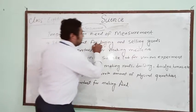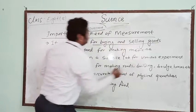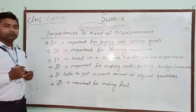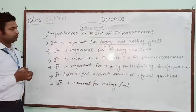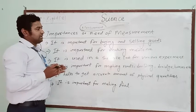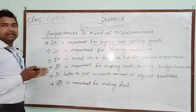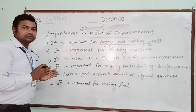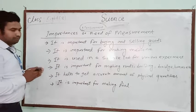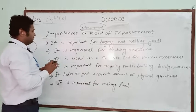The first importance is buying and selling goods. For example, when you go to the shopkeeper, at that time they will compare and measure by the help of the physical balance and then give you the goods.